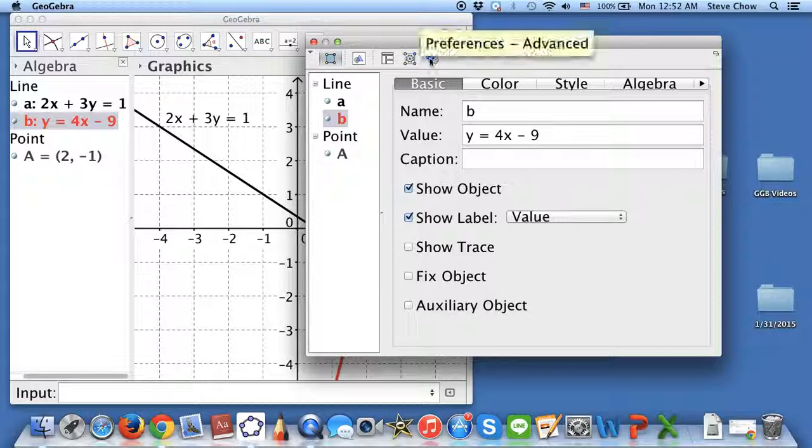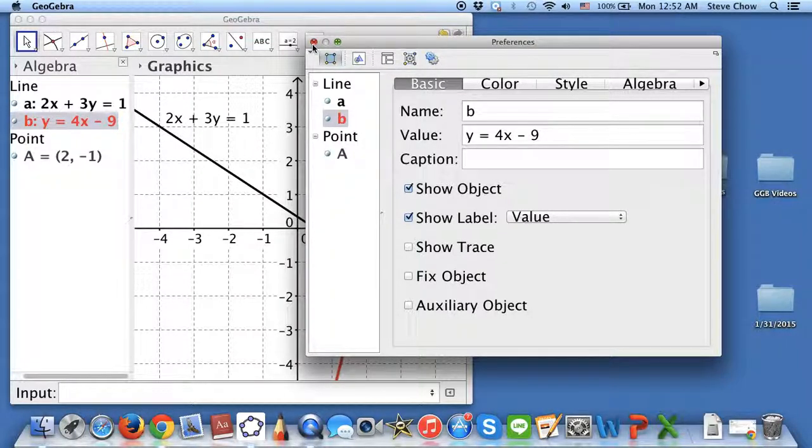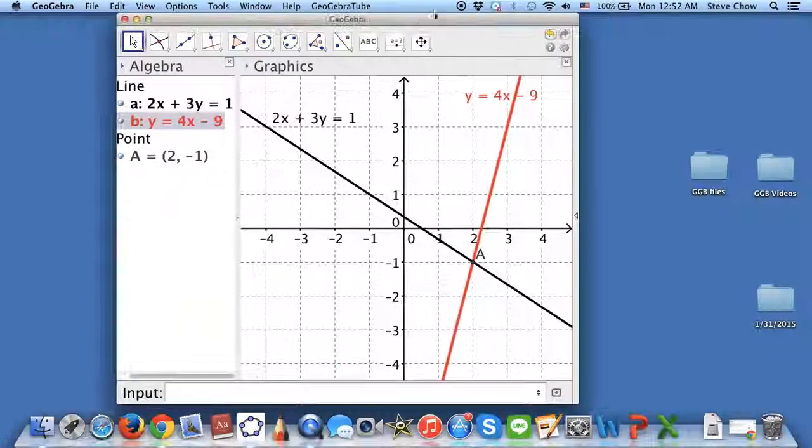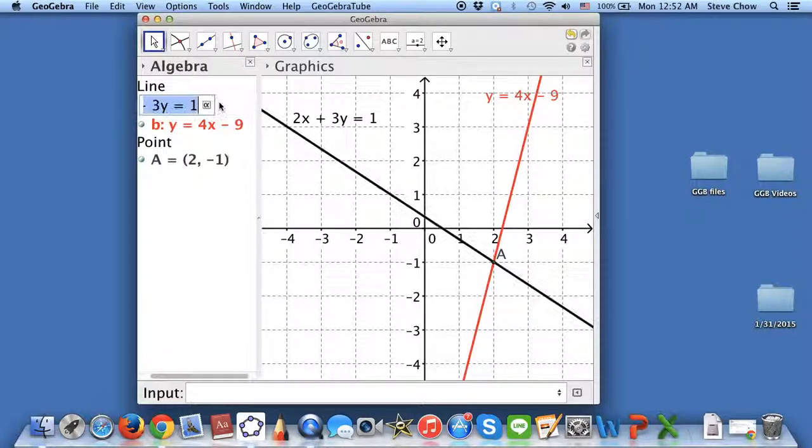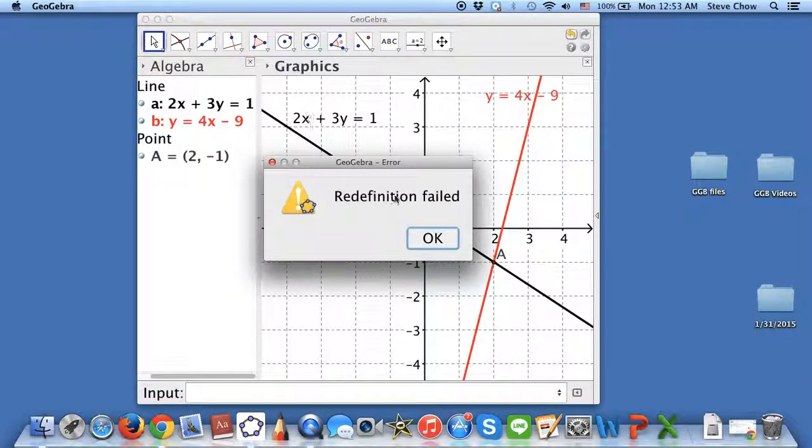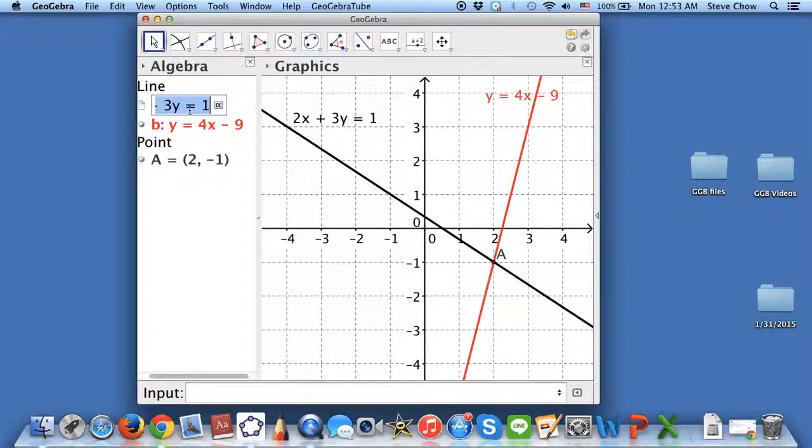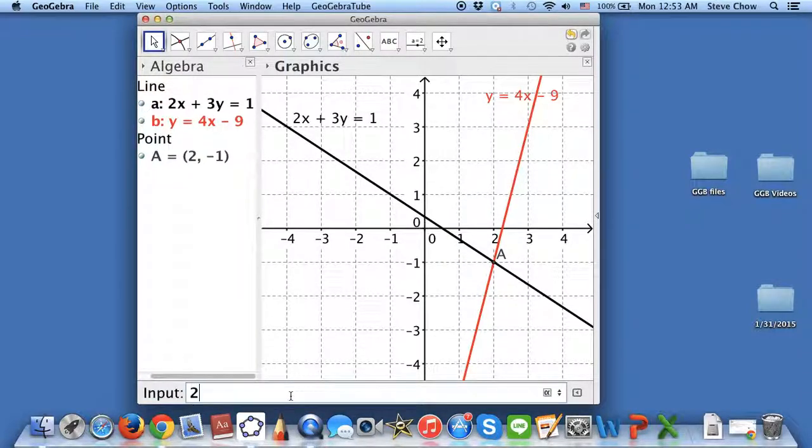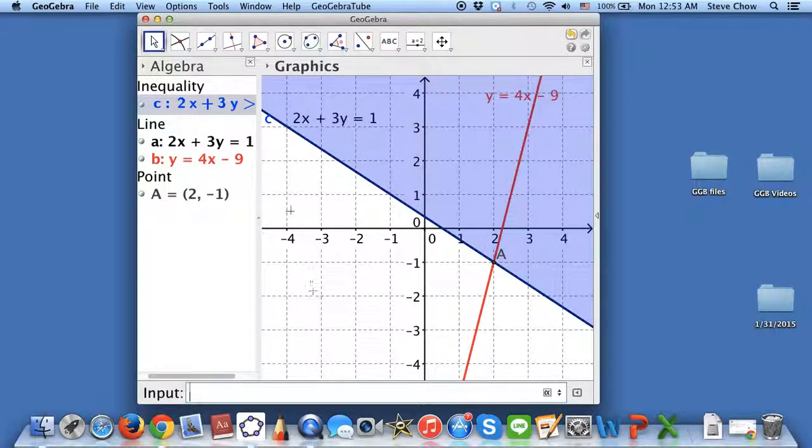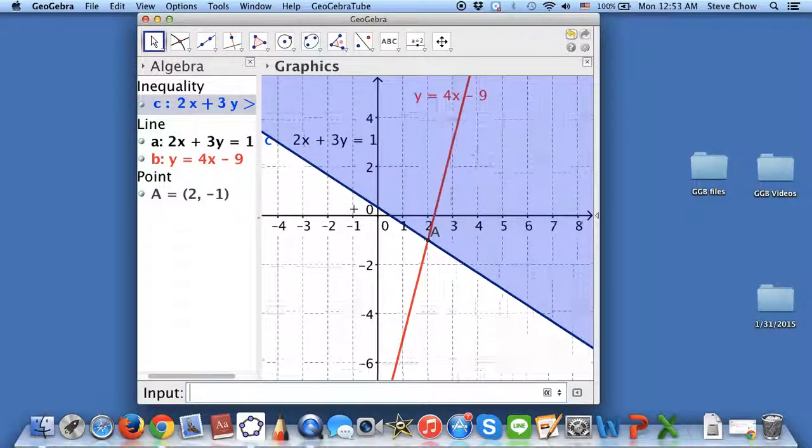Let me see what else I can show you. Sometimes maybe you have to graph inequalities instead. What you want to do is come here. Maybe it's not just a solid line. Maybe you have like greater than. You can totally change that. Now I have a greater than sign. Let me just do here 2x plus 3y greater than 1. I think it's really picky. You have to redo it again.